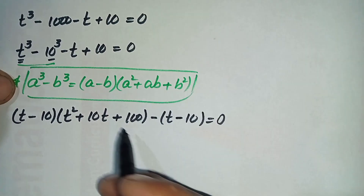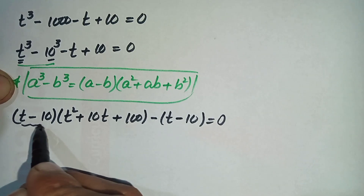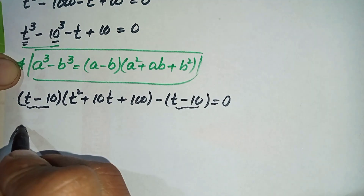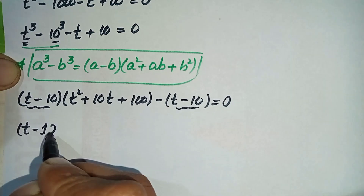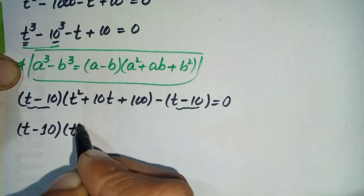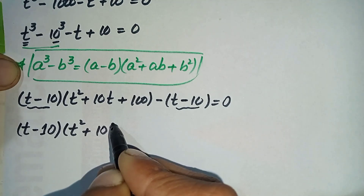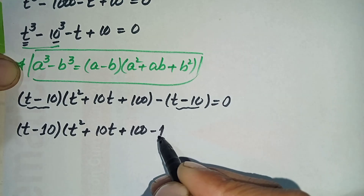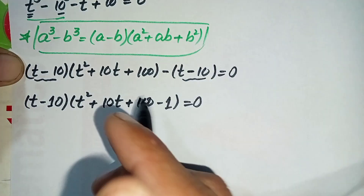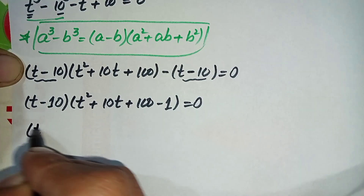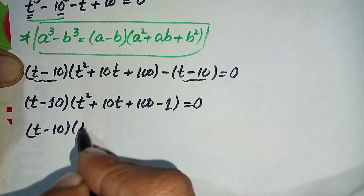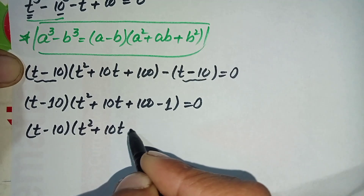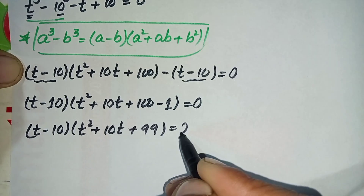Looking at both expressions, (t-10) is common in both terms. Taking (t-10) as a common factor gives: (t-10)(t² + 10t + 100 - 1) = 0, which simplifies to (t-10)(t² + 10t + 99) = 0.